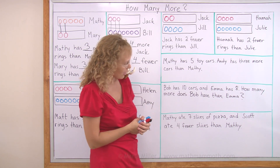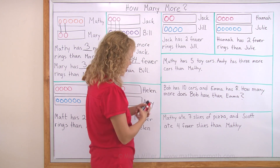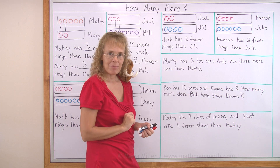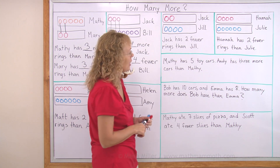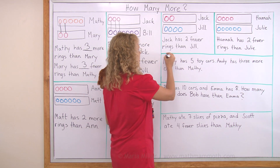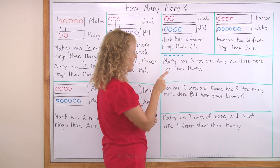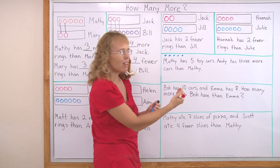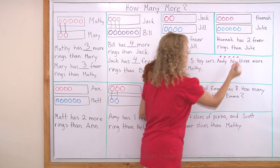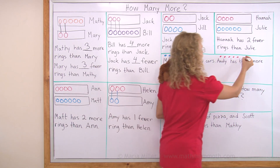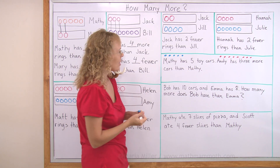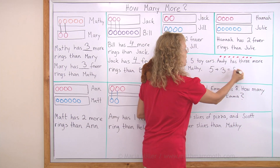Matthew has five toy cars — he likes playing with toy cars. Andy has three more cars than Matthew. How many cars does Andy have? We could draw the cars. Matthew has five — imagine these are Matthew's cars. Andy has three more cars than Matthew, so for Andy I can first draw the same amount, the five, and then I have to draw three more cars for Andy, so that he has three more cars than Matthew. So now how many does Andy have? It would be the five that were the same and then the three more — so it is eight cars.